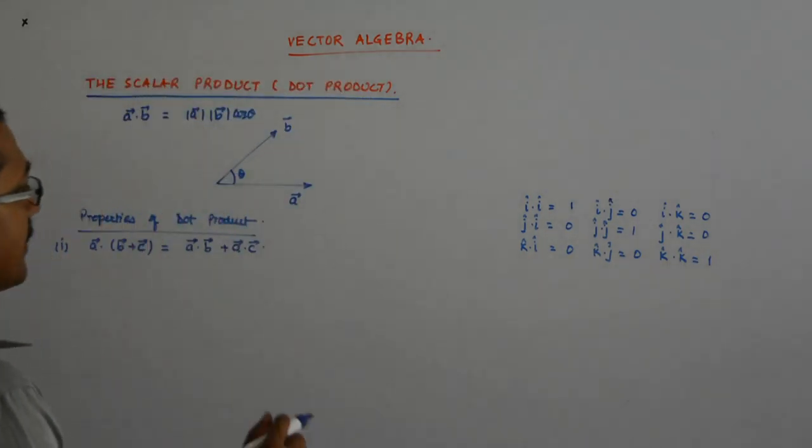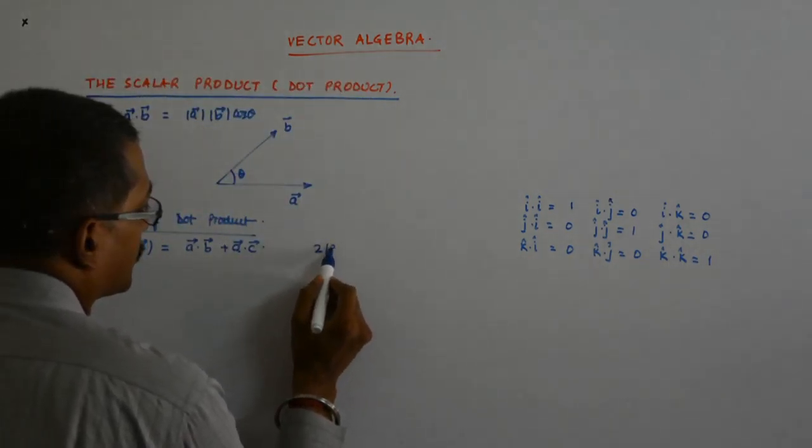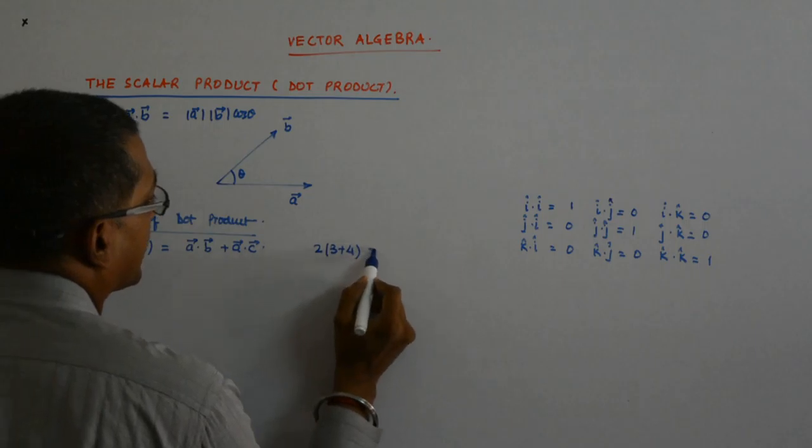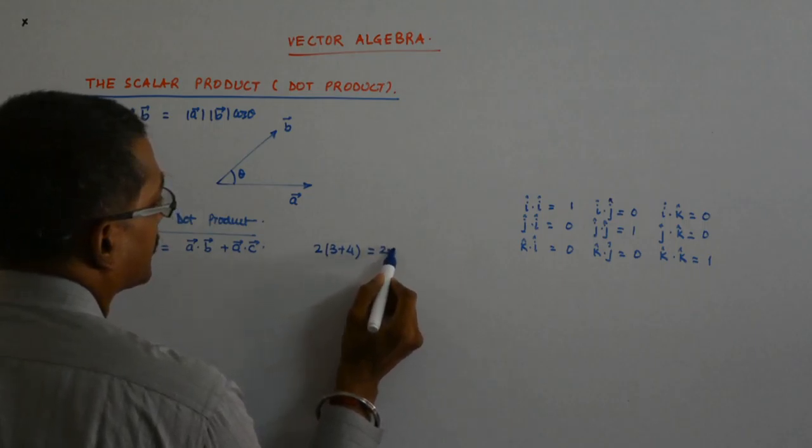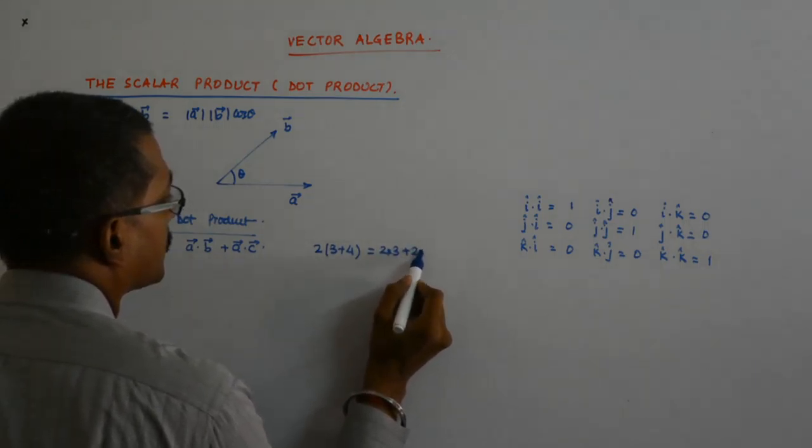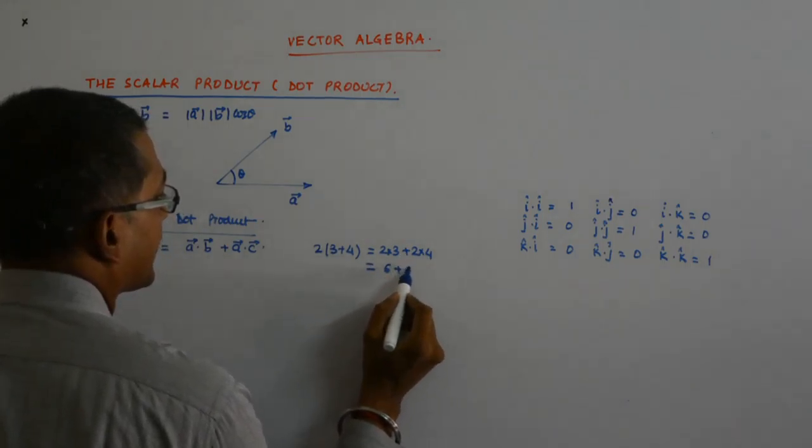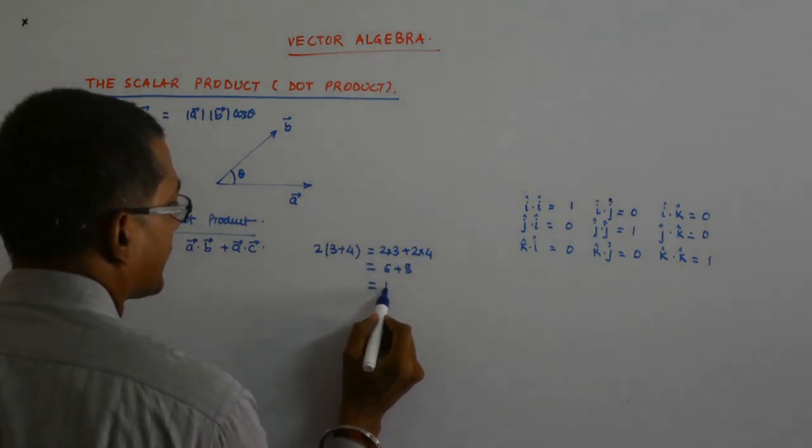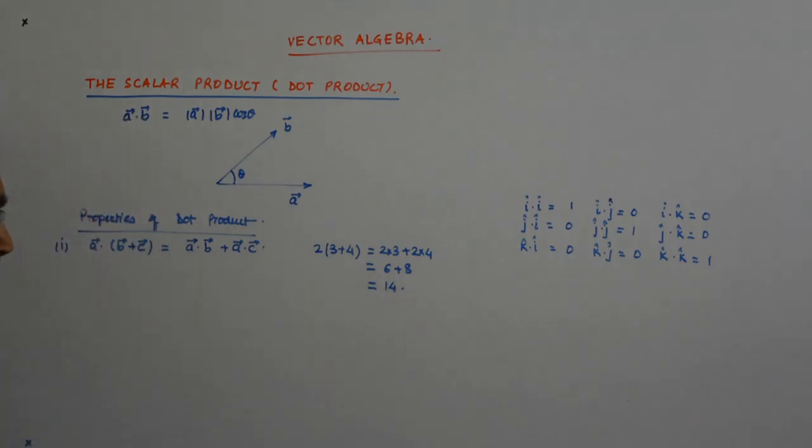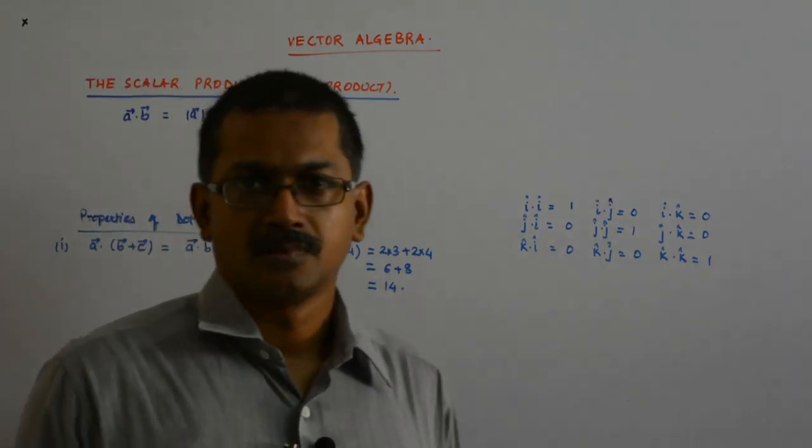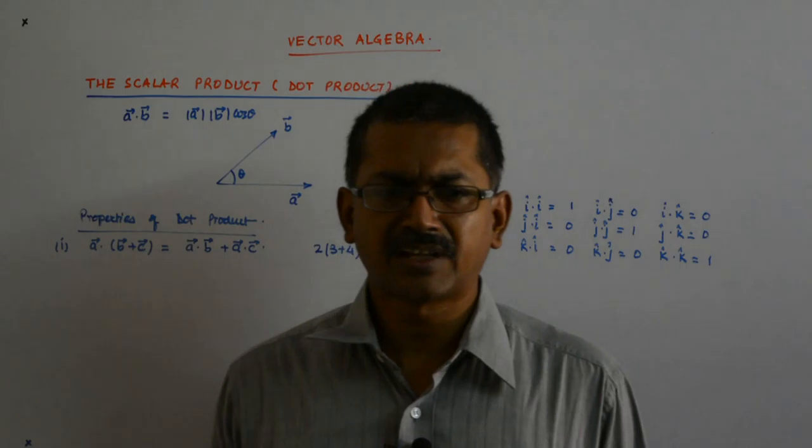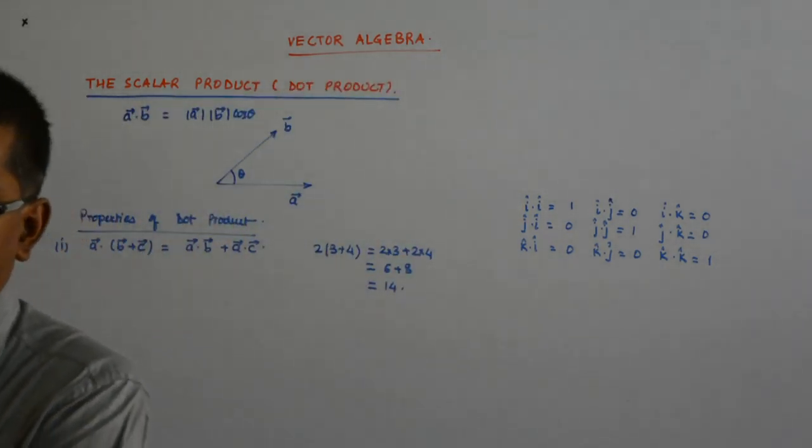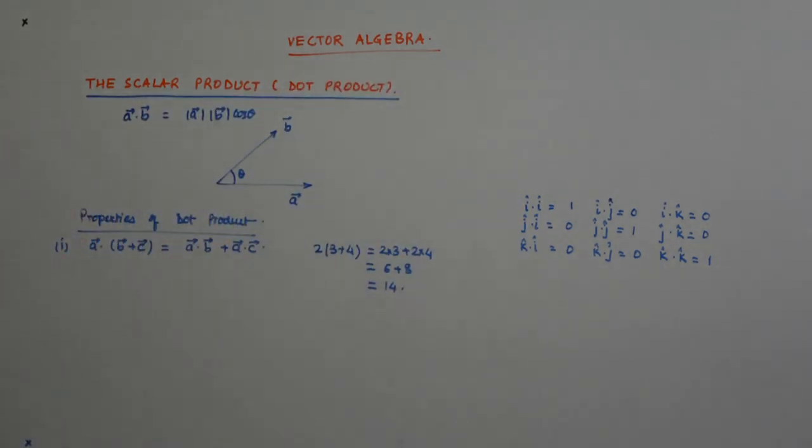In the same way as we have seen in the numbers. 2 into 3 plus 4 is 2 into 3 plus 2 into 4, which is equal to 6 plus 8, which is equal to 14. It is the same kind of thing that is happening. The distributive property holds.